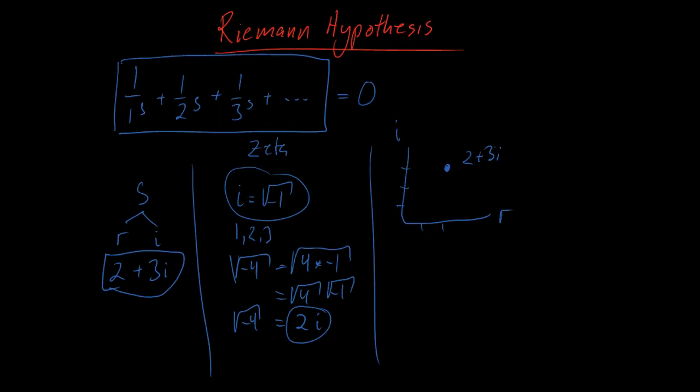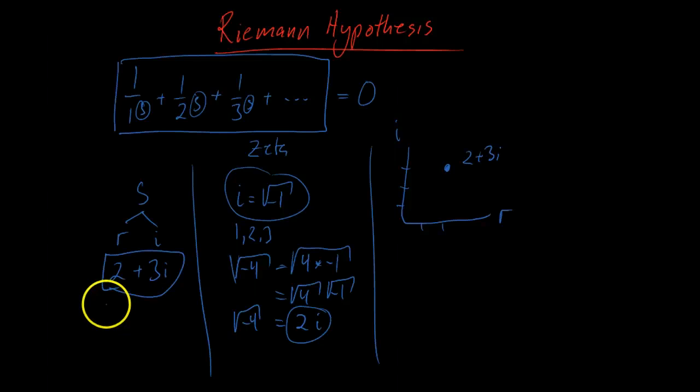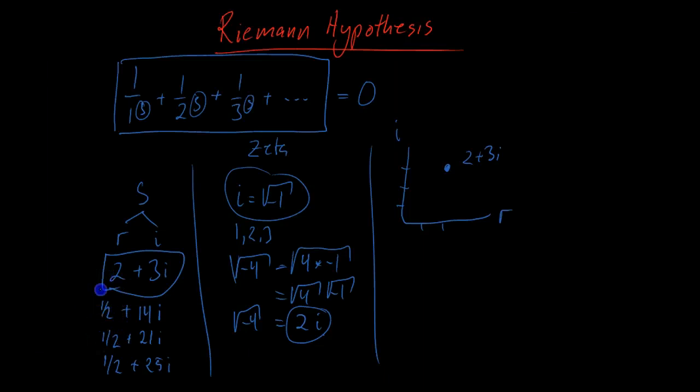Now we know what a complex number is, and this is what we're putting into s in the zeta function. The question is still: for what values of s — as a complex number — will the whole thing equal zero? If you try it out, it turns out that when s equals one half plus 14-point-something times i, the zeta function equals zero. Also when s equals one half plus 21i, and when s equals one half plus 25-point-something times i.